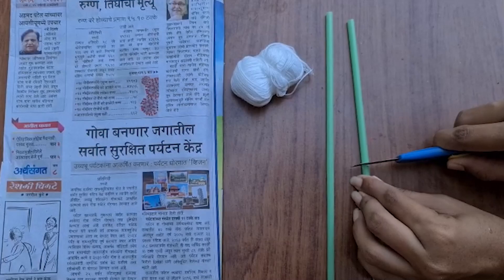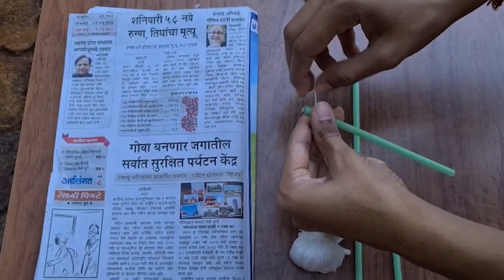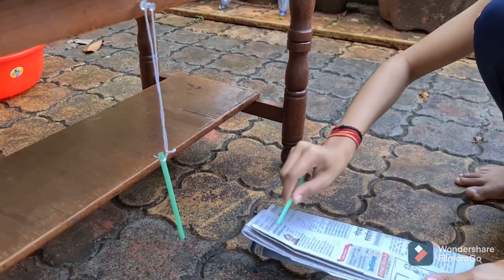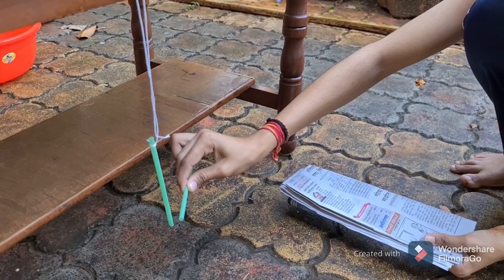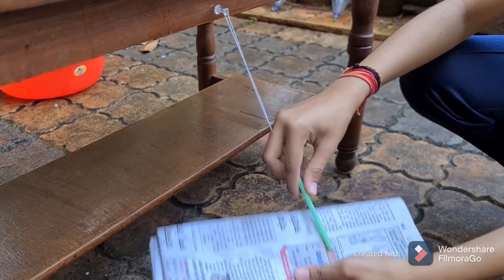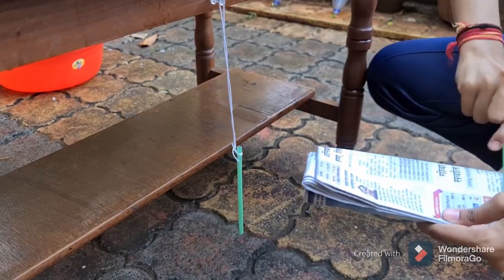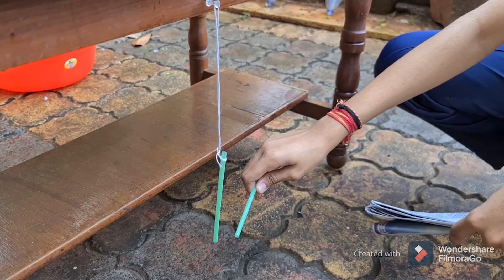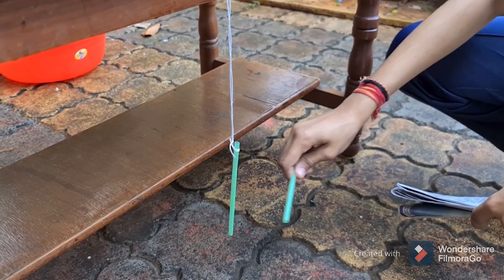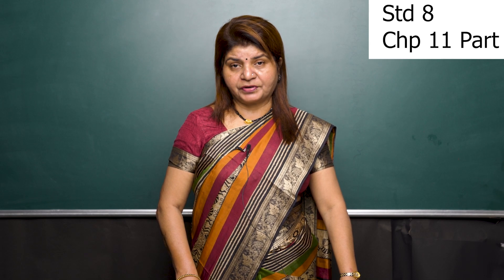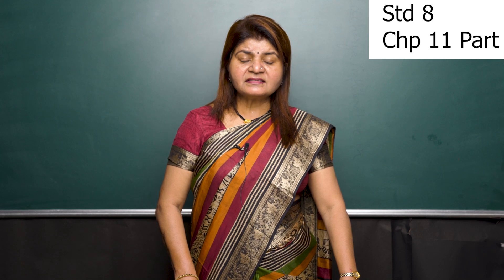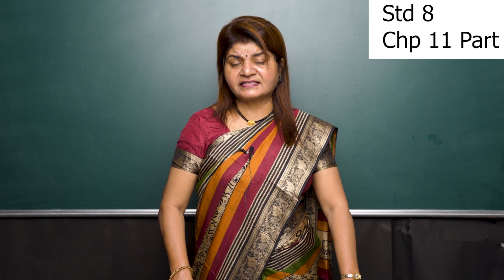The second non-contact force is electrostatic force. Take a plastic straw, cut it into two pieces, tie a thread to one piece and suspend it from the edge of a table. Rub the other piece on paper and bring it near the suspended piece. Then rub the suspended piece and bring the other piece near it. A piece of straw acquires electrostatic charge after being rubbed with paper. The force exerted by a charged body on another charged or uncharged body is known as electrostatic force — it is a non-contact force.